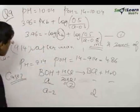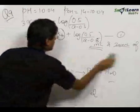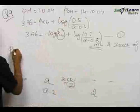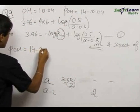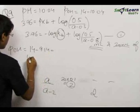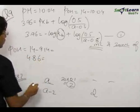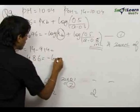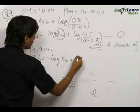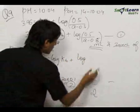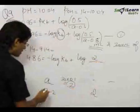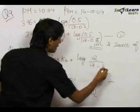So again we can apply the buffer equation to be equal to POH which we found out to be equal to 14 minus 9.14 that is 4.86 is equal to PKB which is equal to minus log KB plus log of again salt upon base. Our salt over here is 2 and our base is A minus 2.